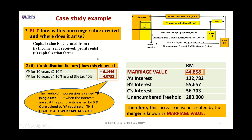Since income doesn't change, we look at the capitalization factor. When valuing a freehold, we use the YP single rate. When valuing a leasehold interest, we use the YP dual rate. There is a difference in value when capitalizing using YP single rate versus YP dual rate — the dual rate leads to a lower capital value. This explains why marriage value exists between multiple interests.